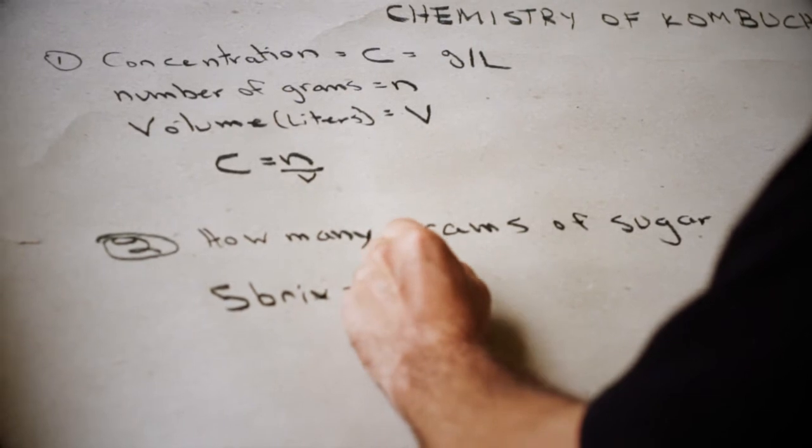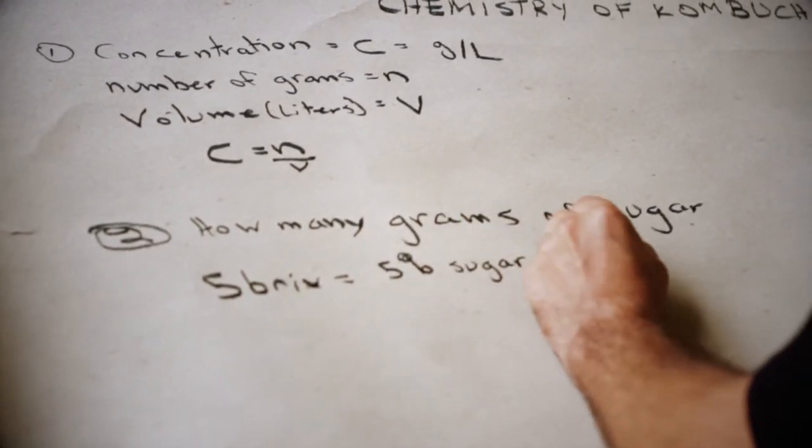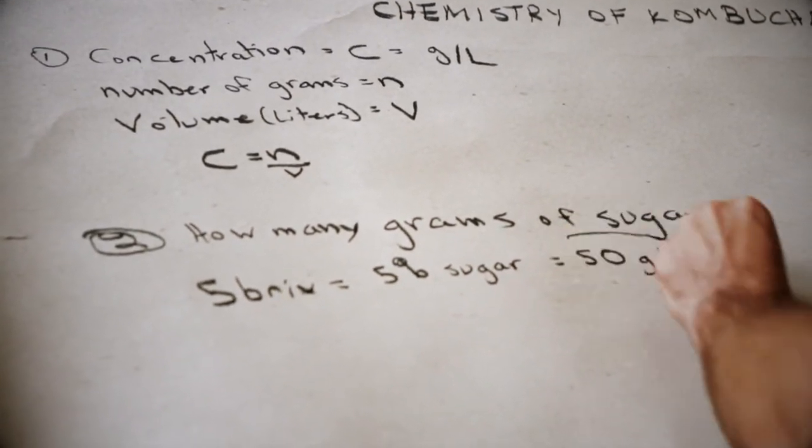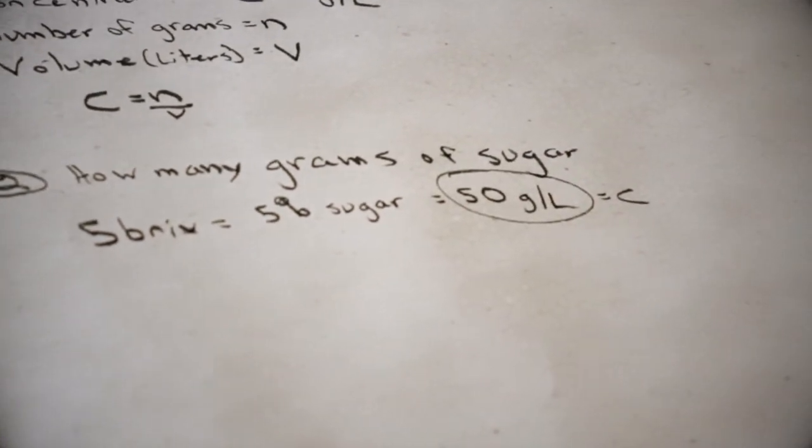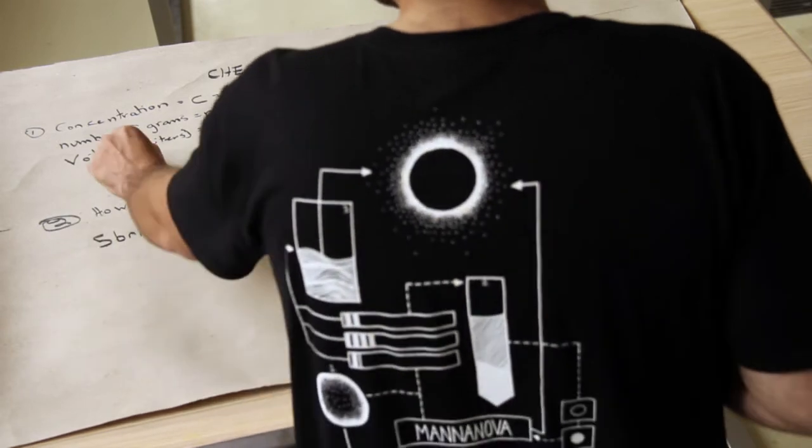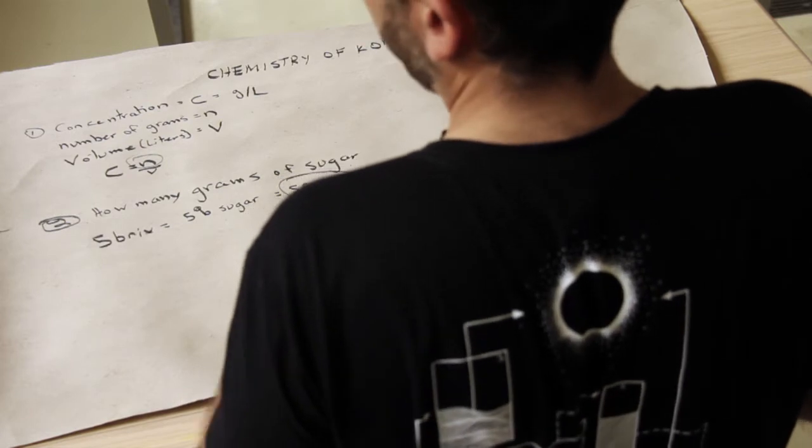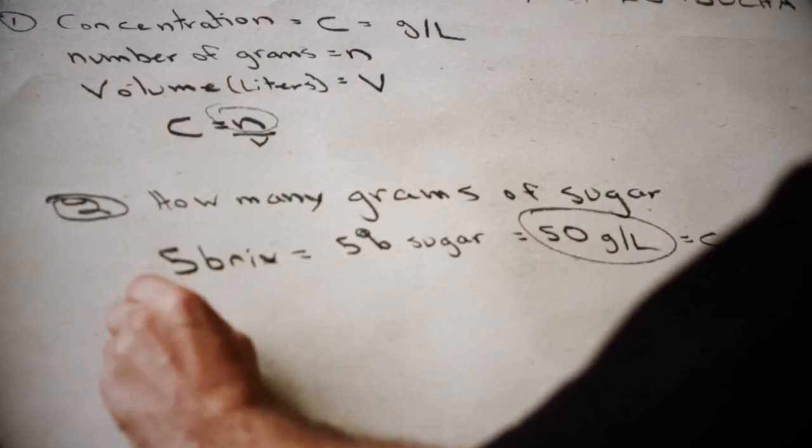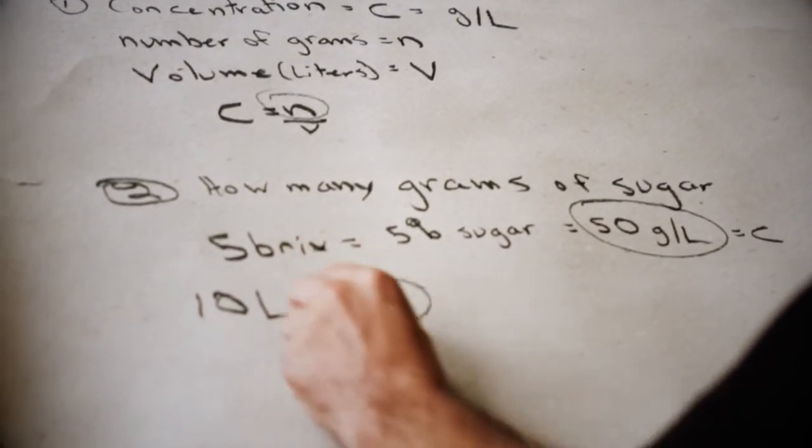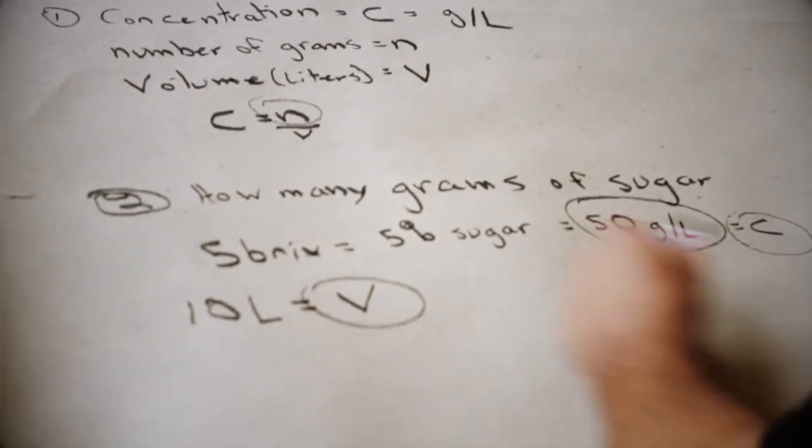So how many grams of sugar? Five bricks equals 5% sugar equals 50 grams per liter. So this here is C for concentration. Now, what we're asking, the question is, what is the number of grams that we have in a certain amount of liquid? So let's say we have 10 liters. That will be V. So we have our V, we have our C, and so what we're looking for is N.